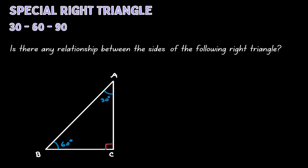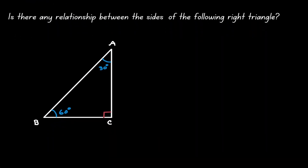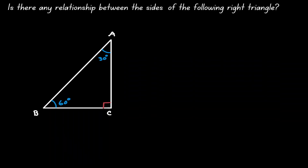Welcome. Let's discuss the special right triangle of 30, 60, 90 degrees. What we want to find out is, is there any relationship between the sides of this right triangle?